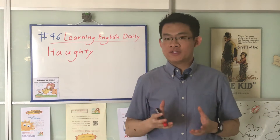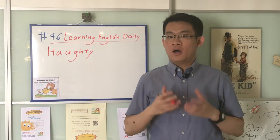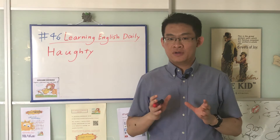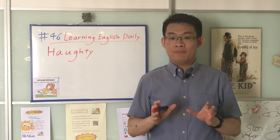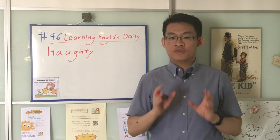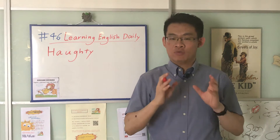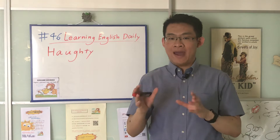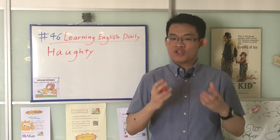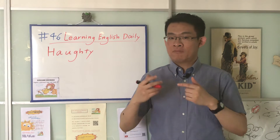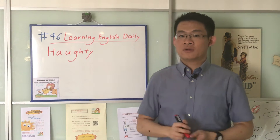What does haughty mean? Haughty means arrogant. For example, you could say Sam is a really haughty man because he constantly looks down upon his colleagues.